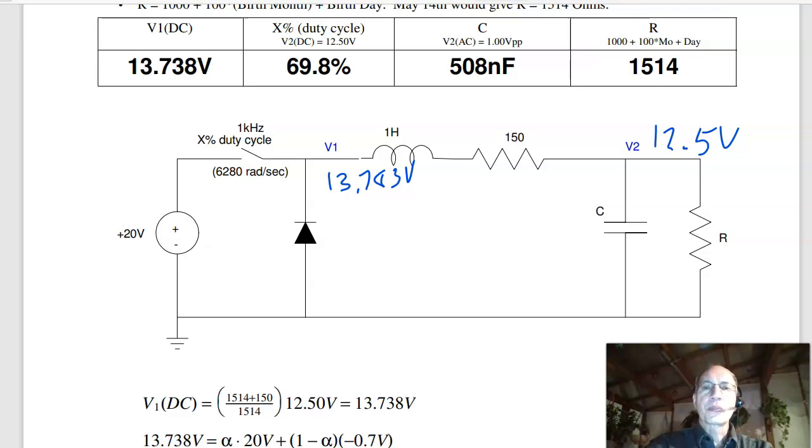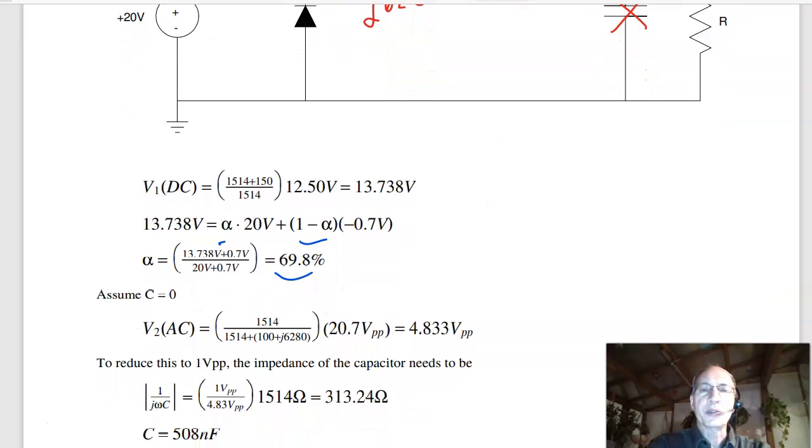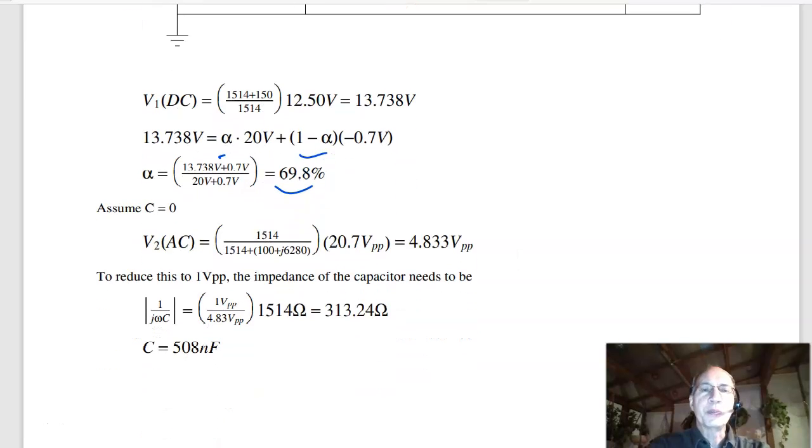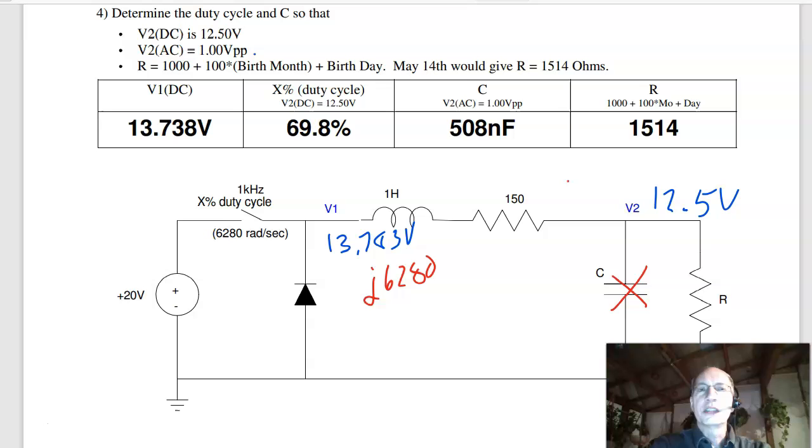To find the capacitor. What I'd like doing, a couple ways to do this. What I'd like doing is pretend the capacitor isn't there. Solve for the AC voltage at V2. It's going to be R over R at a kilohertz. This is J6280. R over R plus 150 plus J6280, times the AC voltage of V1, 20.7 volts peak to peak. And I get 4.83 volts peak to peak. I want the ripple to be 1 volt peak to peak, so I need to make the capacitor have an impedance that's that much less than the 1514 ohms. It should be about 1 fifth of that, 313 ohms. I know omega, 6280. Solve for C. C is 508 nanofarads, or 0.5 microfarads. So that's problem 4, design.